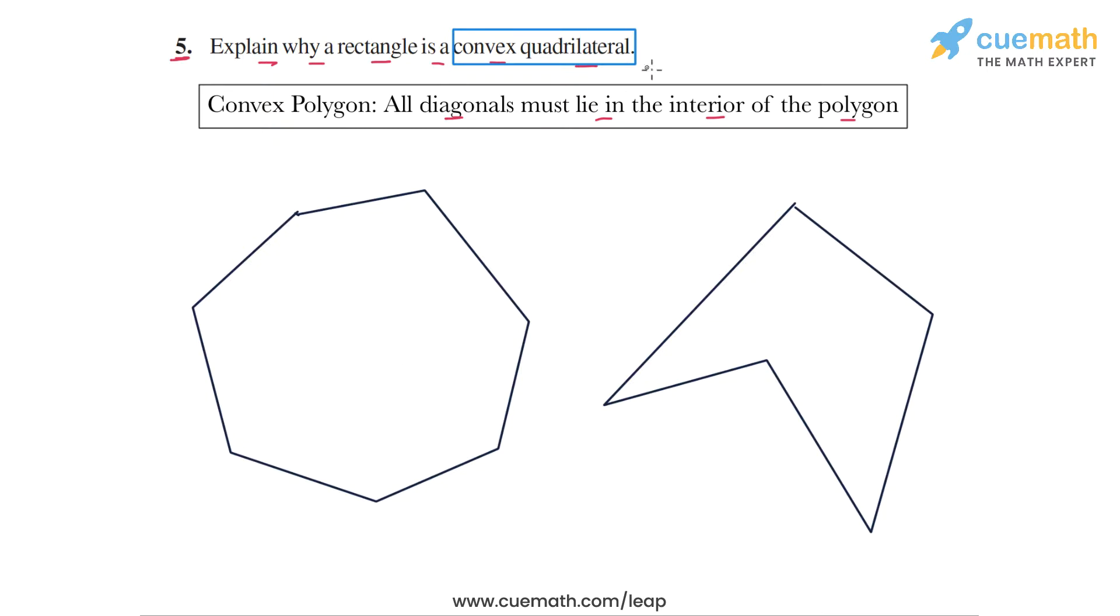The one on the left is a convex polygon because if you draw any diagonal in this polygon, for example, if you join the vertex here to the vertex here or if you join this vertex to this vertex here, the diagonals will lie completely inside the polygon. So this polygon on the left is an example of a convex polygon.